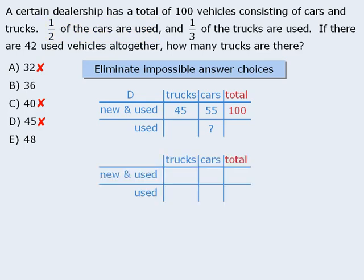At this point, we only need to test one answer choice. If it works, we'll take that answer. If it doesn't work, the other answer choice must be correct. Let's try answer choice E, which tells us that there are 48 trucks. If there are 48 trucks, then there must be 52 cars, for a total of 100 vehicles. If one-third of the trucks are used, then there are 16 used trucks, and if one-half of the cars are used, then there are 26 used cars. Using these values, we see that there is a total of 42 used vehicles, which matches the condition in the question. As such, the answer to this question is E.